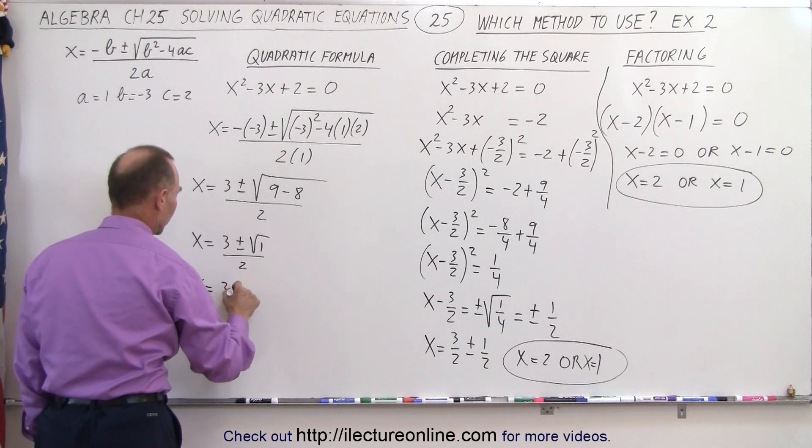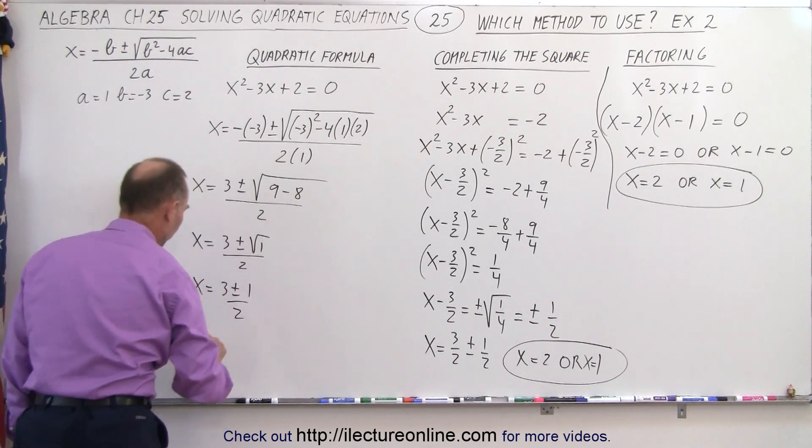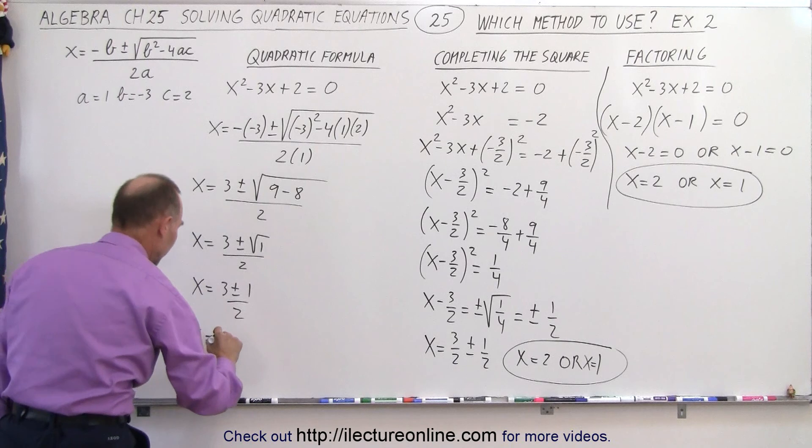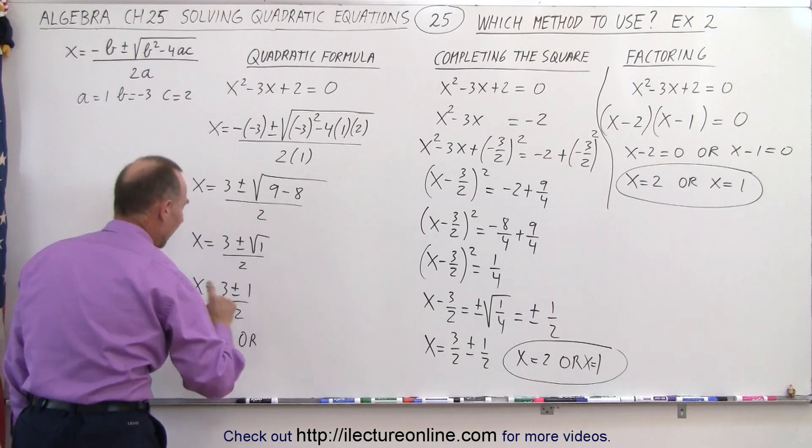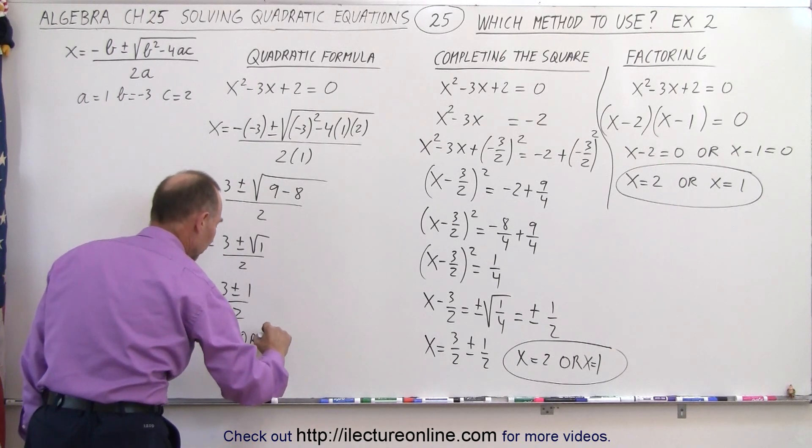X is equal to 3 plus or minus 1 over 2. So that means that X is equal to 3 plus 1 is 4 divided by 2, which is 2. Or X is equal to 3 minus 1 over 2, which is 1.